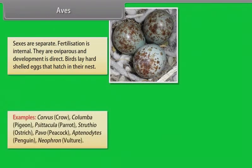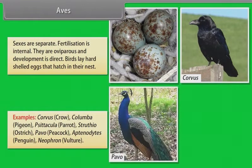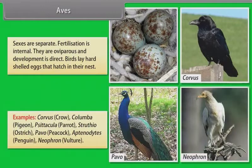Examples: Corvus (Crow), Columba (Pigeon), Psittacula (Parrot), Struthio (Ostrich), Pavo (Peacock), Aptenodytes (Penguin), Neophron (Vulture).